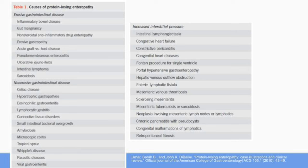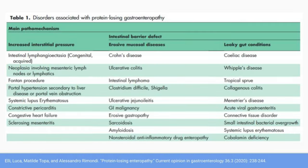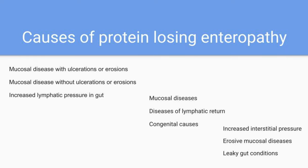Causes of protein-losing enteropathy can be easily found on the internet. There are more than 30 causes that are hard to remember. Different references may classify the causes differently — for example, mucosal diseases with or without ulcerations, lymphatic problems, and congenital causes.